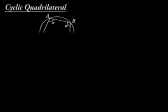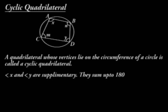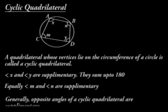A cyclic quadrilateral is a quadrilateral whose vertices lie on the circumference of a circle. Angles X and Y are supplementary — they sum up to 180. Equally, angle M and angle N are supplementary. Generally, opposite angles of a cyclic quadrilateral are supplementary.